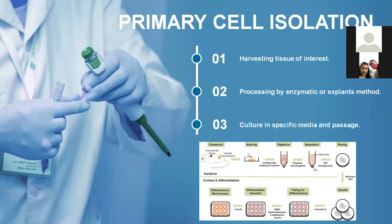What are the steps related to primary cell isolation? I am giving you a general overview of the steps involved. Whatever tissue we obtain, we take care that all infectious screening has been done for the tissue, ensuring it is devoid of any infectious contamination. We are testing for HIV, HBV, human immunodeficiency virus, HCV virus, syphilis, and rubella infection. Once the tissue is free from these infections, only then do we process the tissue in our laboratory.